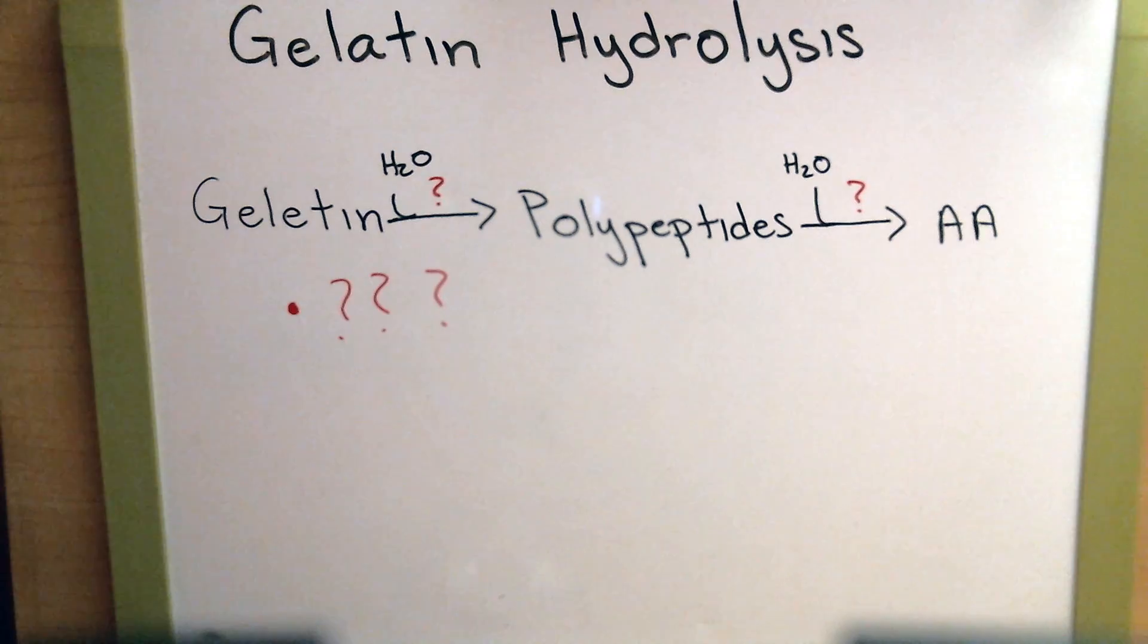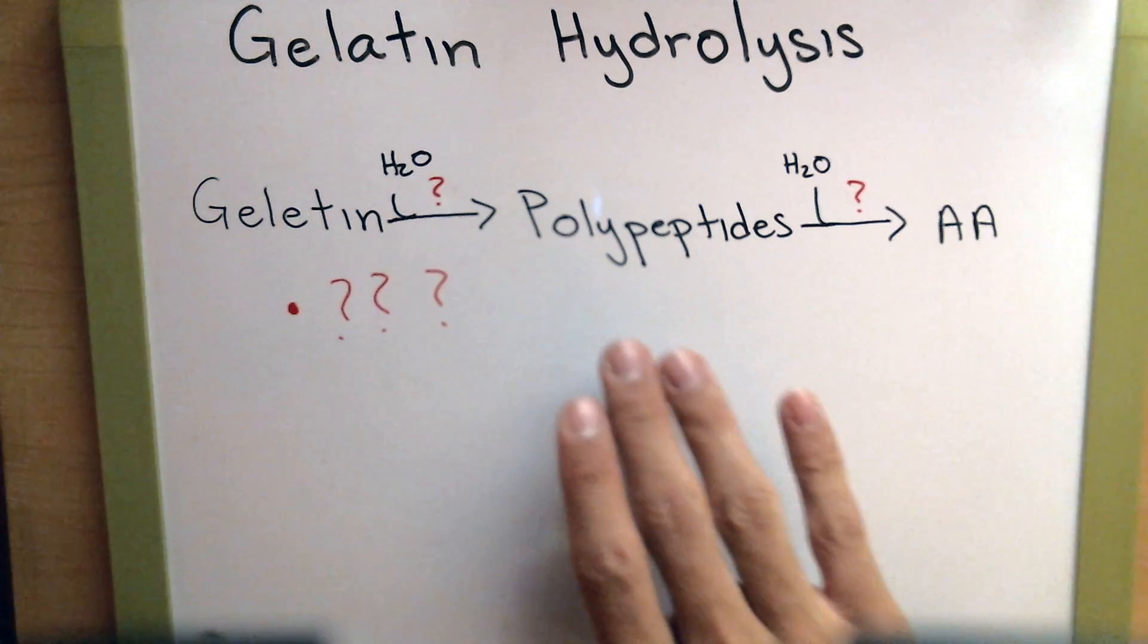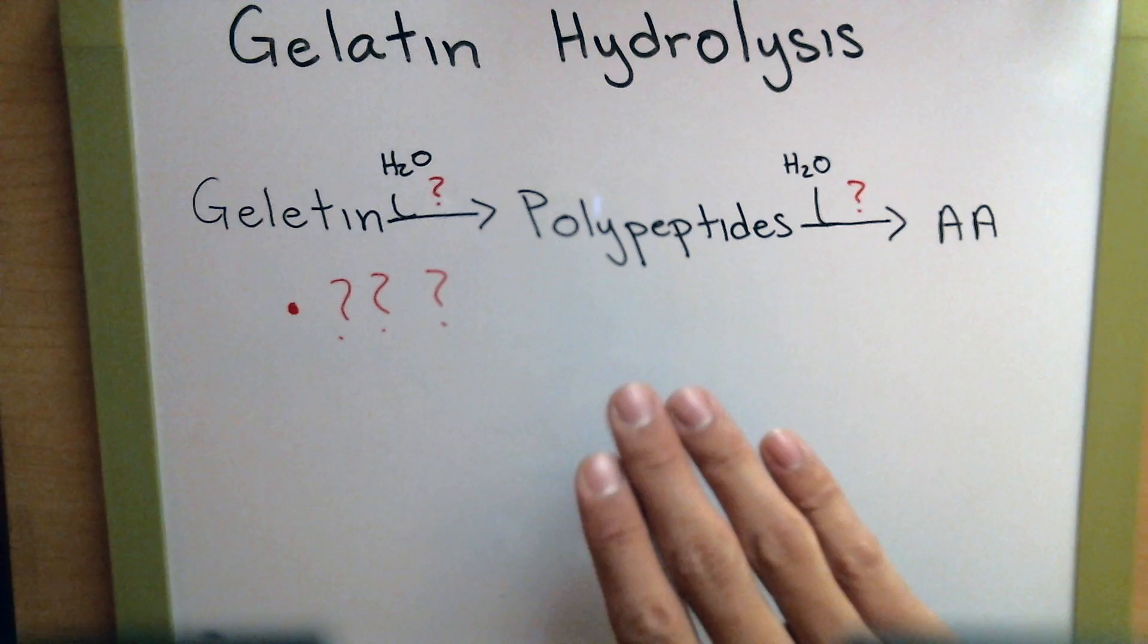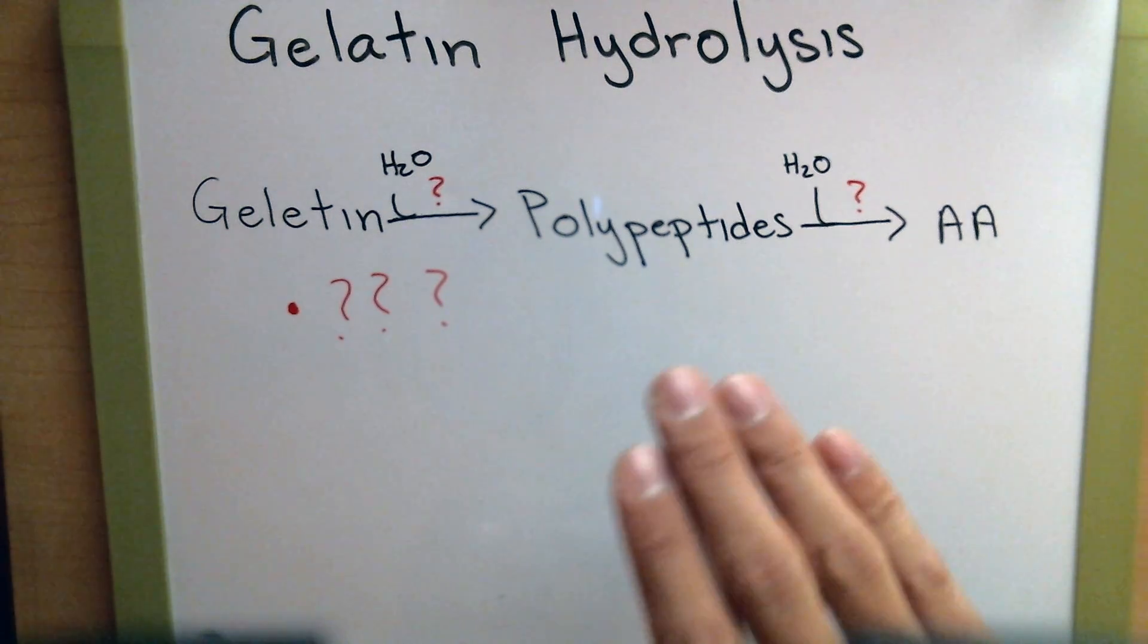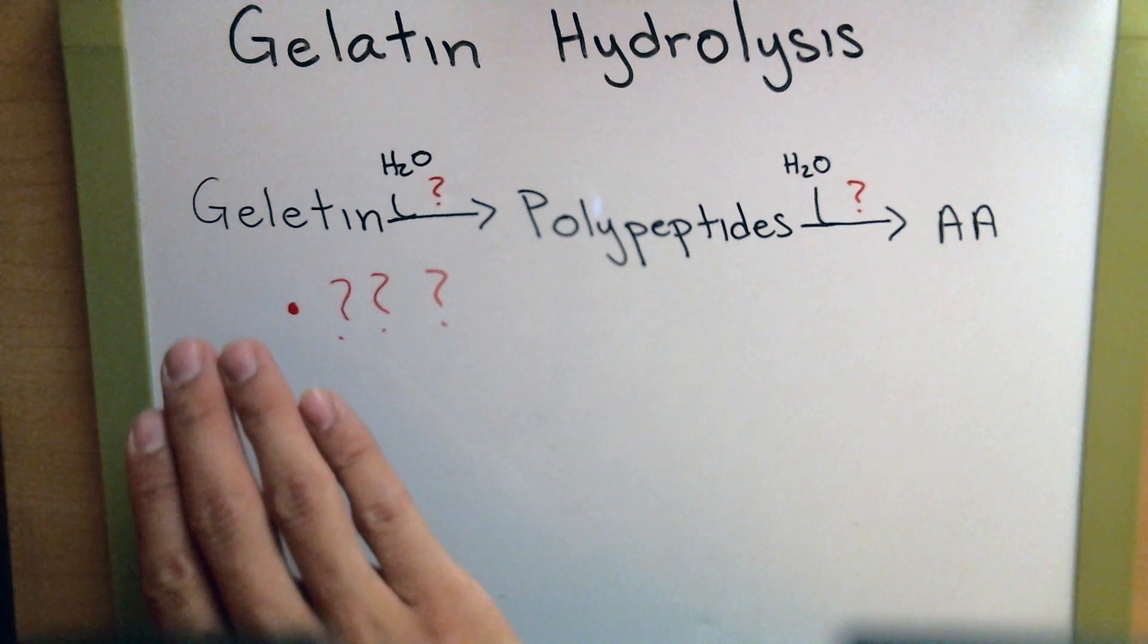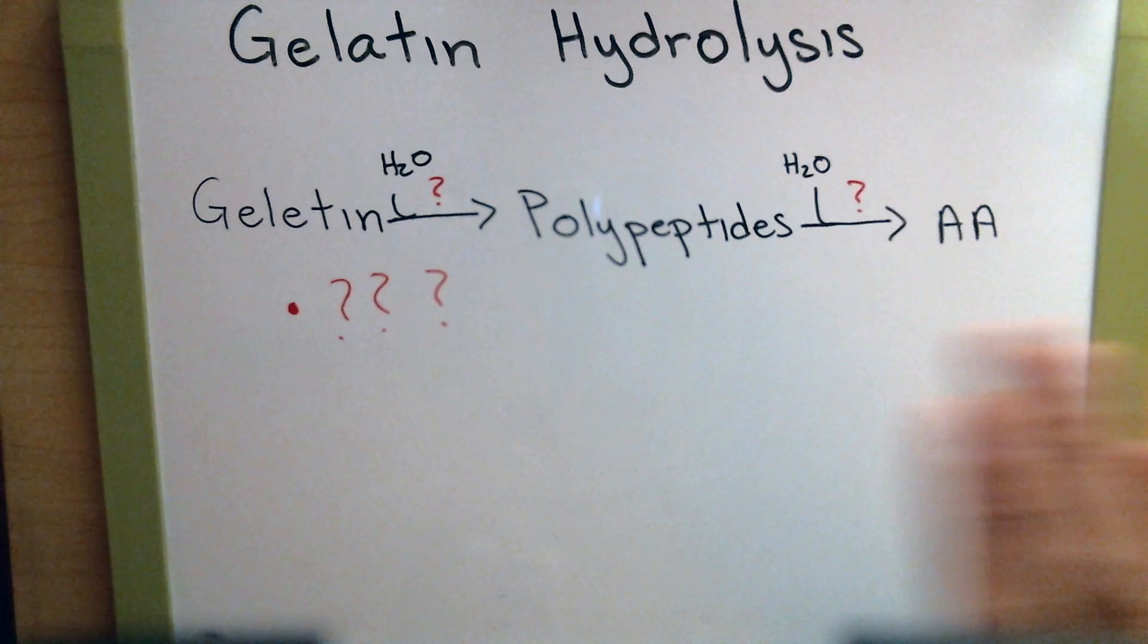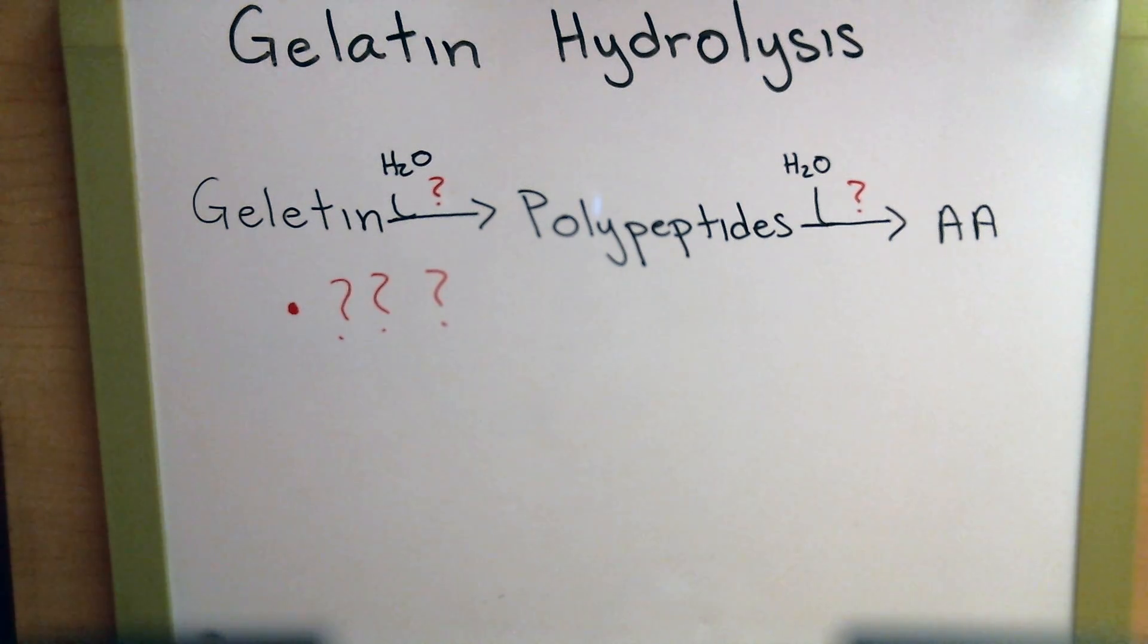The enzyme for the first step is gelatinase. So if gelatinase is the enzyme that breaks down gelatin into polypeptides, what's the enzyme that breaks down polypeptides to amino acids? Don't think too hard about it. It's the same one for polypeptides to amino acids as it was for gelatin to polypeptides. Gelatinase is the same enzyme that breaks down gelatin to polypeptides and then polypeptides to amino acids. That one enzyme does both things.